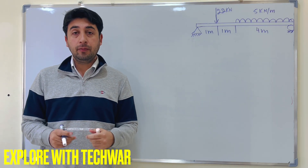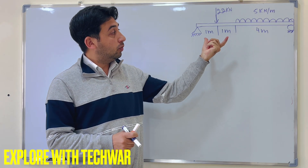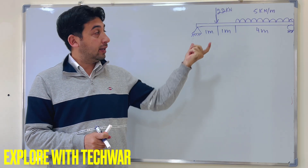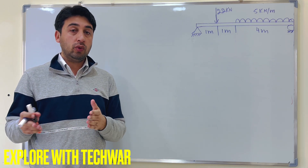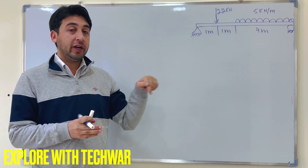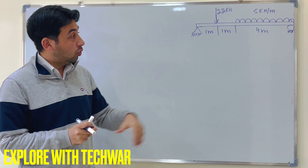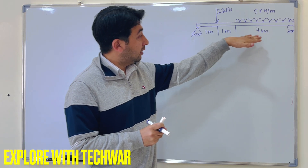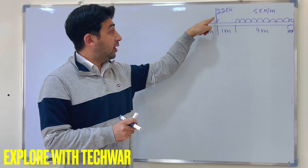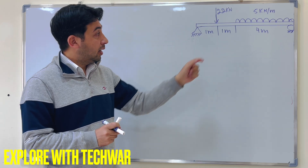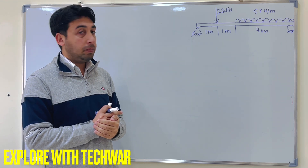Hello everyone. In this video we will solve this problem: find the reaction forces on a simply supported beam which has a uniformly distributed load. In the previous video we solved for point load only. Here, the beam has a total length of 6 meters, a point load of 22 kilo Newtons at 1 meter, and a uniformly distributed load of 5 kilo Newtons per meter over the last 4 meters.